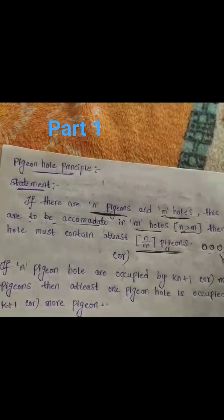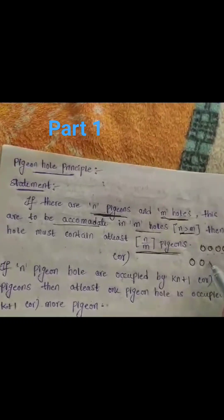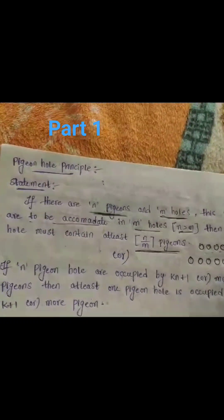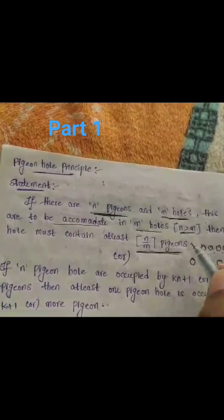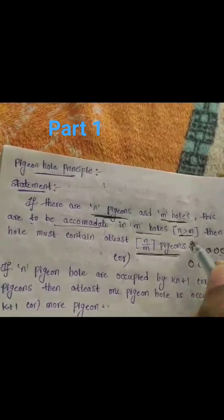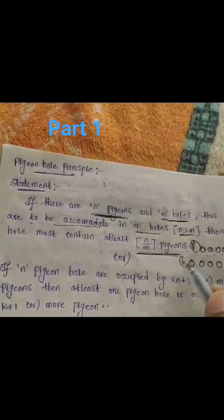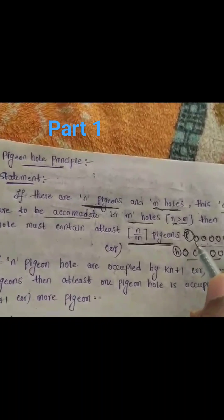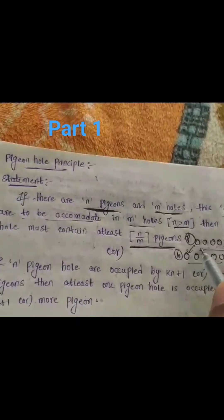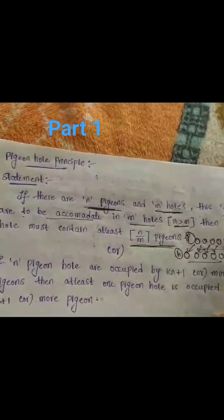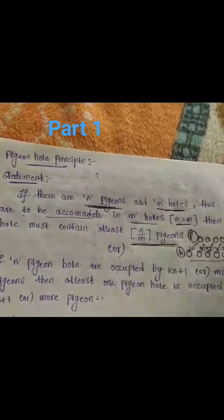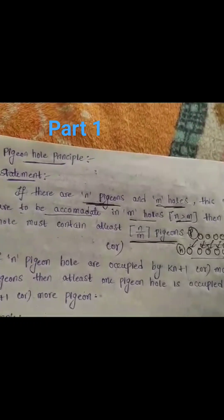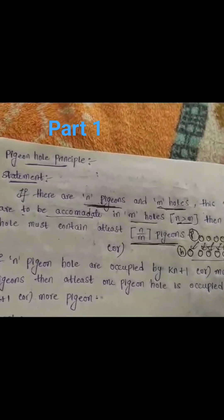For example, if you have five pigeons — that is n — and six holes — that is m — these are the pigeons and these are the holes. If you have five pigeons and six holes, each pigeon will accommodate in one hole and one hole will be remaining.